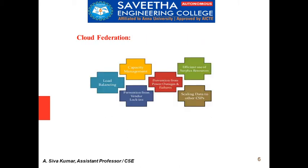In cloud federation, the things aggregated together include load balancing, capacity management, prevention from vendor lock-ins, prevention from power outages and failures, efficient use of surplus resources, and scaling data to other cloud service providers. These are all aggregated to give the cloud federation.